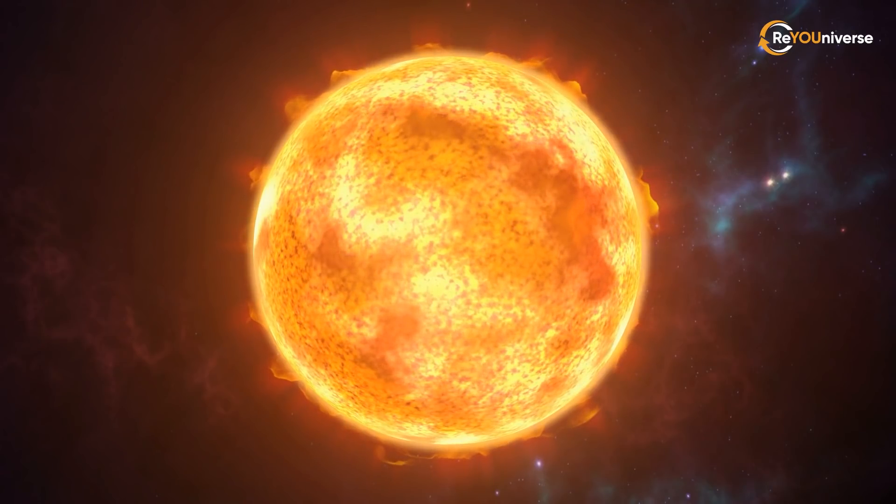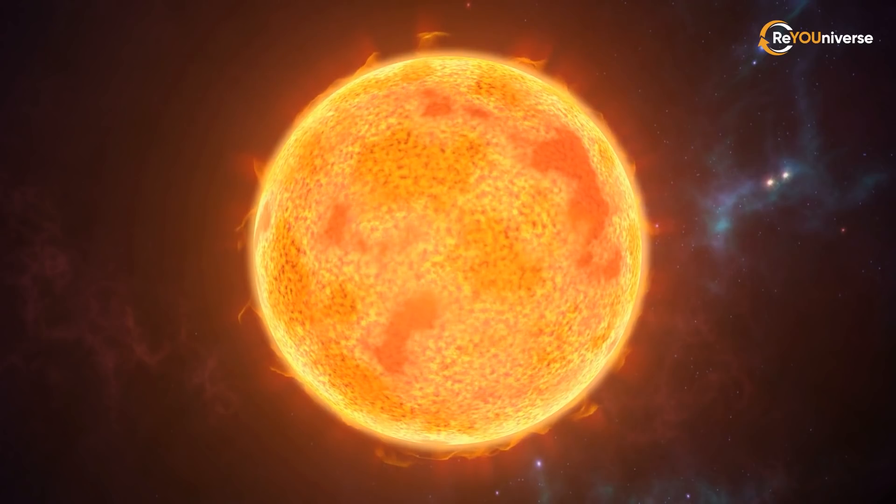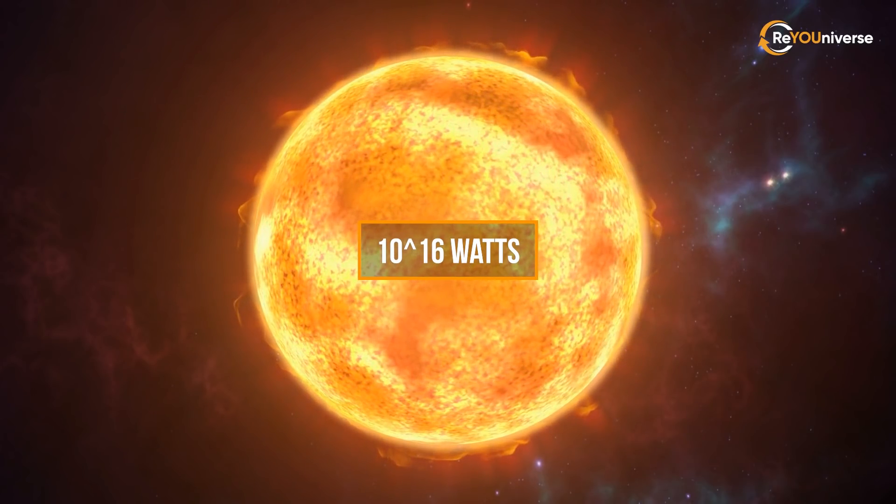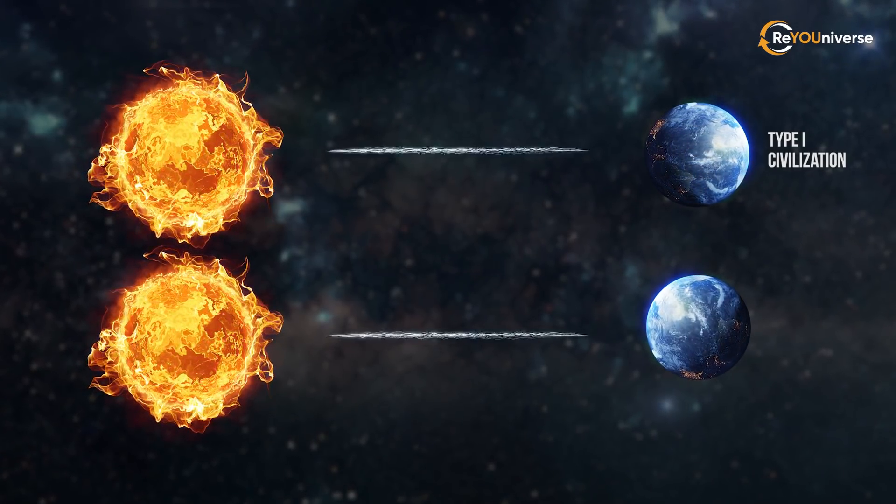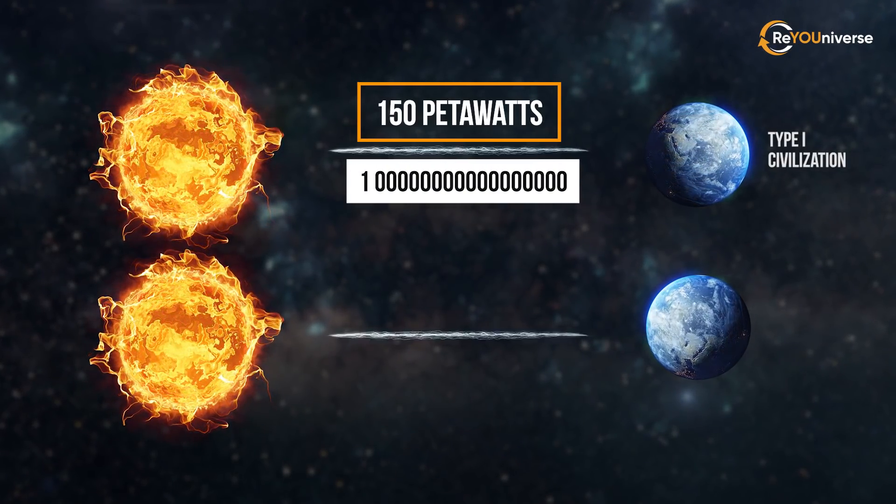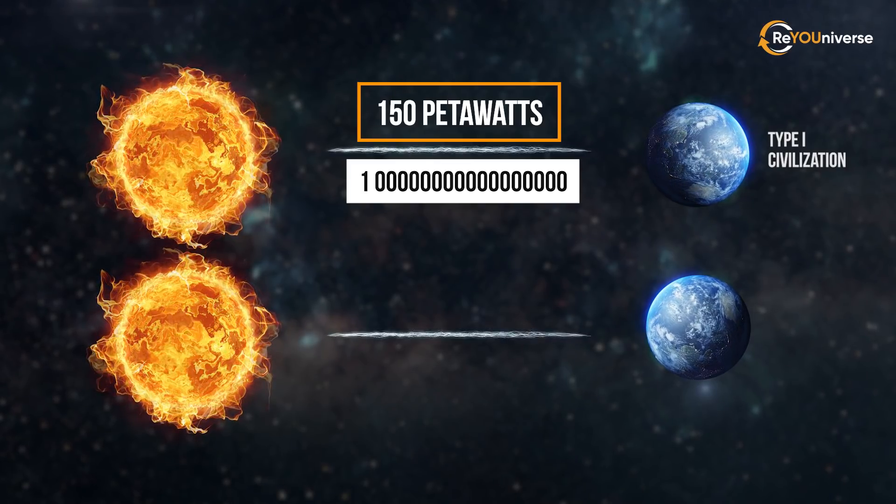Type 1 civilization is able to use all the energy coming from the star to its planet, 10^16 watts, to be precise. For Earth, that is about 150 petawatts. One is followed by 17 zeros. This greatly exceeds what humans can use.